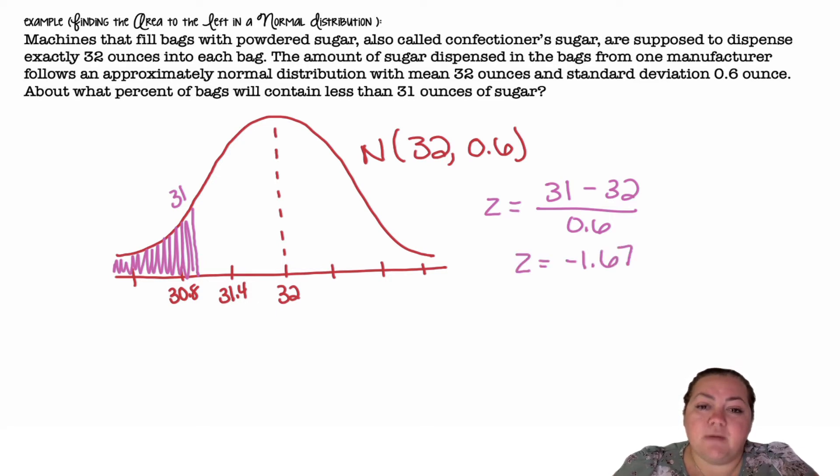So if I was using table A, I would look for negative 1.6 in the left column and 0.07 on the top. And then I would come together to find that area or that probability.